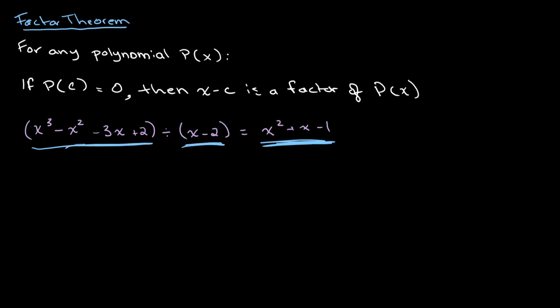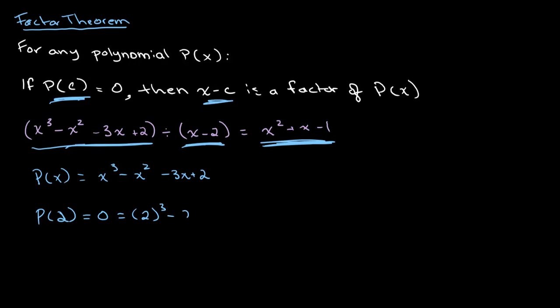So therefore, if x minus 2 is similar to x minus c, then we should be able to plug in p of c, or in this case p of 2, and we will get 0 as a return. So if p of x is equal to x cubed minus x squared minus 3x plus 2, then p of 2 should equal 0, which is equal to 2 cubed minus 2 squared minus 3 times 2 plus 2. This gives us 8 minus 4 minus 6 plus 2, which is 10 minus 10, equal to 0.